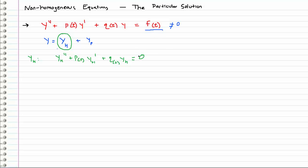yh double prime plus p(t) yh prime plus q(t) yh equals zero. We drop the f(t), we replace it with a zero, and we solve this equation to give us our homogeneous solution.